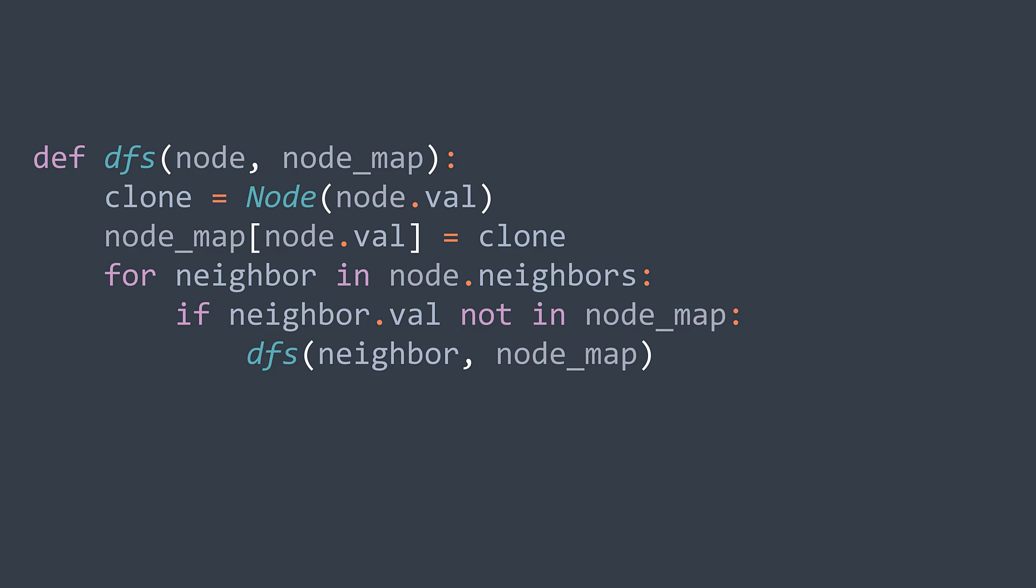Now that we made sure that the clone whose value is neighbor.val is in node map, we add it to neighbors of the actual clone. We add node map of neighbor.val. After the loop, our clone is ready to be returned. We return it.